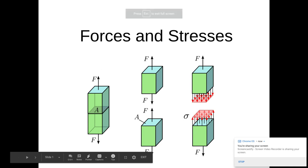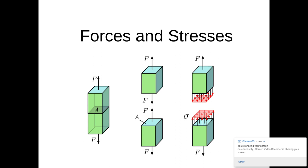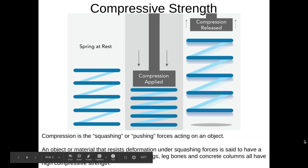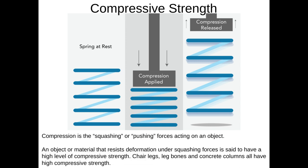We're going to have a look at forces and stresses as part of the DT-GCSE theory course. There are five forces you need to know. The first one is compressive strength. Compression is the squashing or pushing forces acting on an object — in this case, a spring. Other good examples would be concrete columns, chair legs, and leg bones — things that have forces that push them together.